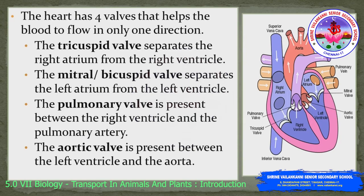When the ventricles contract, the valves between the auricles and ventricles close, thus preventing the backflow of blood into the auricles. Likewise, when the ventricles relax, the valves present between the pulmonary artery and the right ventricle, or between the aorta and the left ventricle, close, thus preventing the backflow of blood into the ventricles.